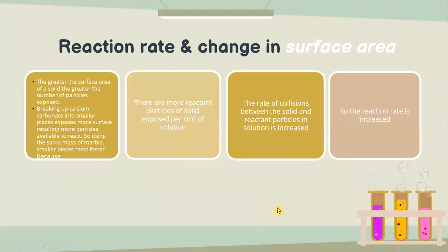Let's look into the second factor: the effect of surface area on reaction rate. The greater the surface area of a solid, the greater the number of particles exposed. Breaking up calcium carbonate into smaller pieces exposes more surface, resulting in more particles available to react. Using the same mass of calcium carbonate, smaller pieces react faster because there are more reactant particles of the solid exposed per centimetre cube of solution, and the rate of collision between the solid and reactant particles in solution is increased, so the reaction rate is increased.